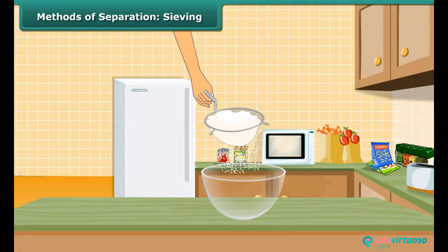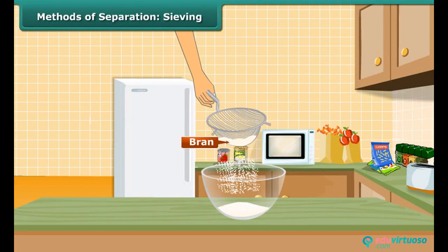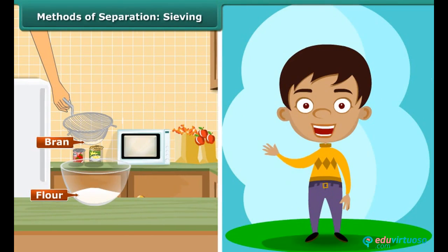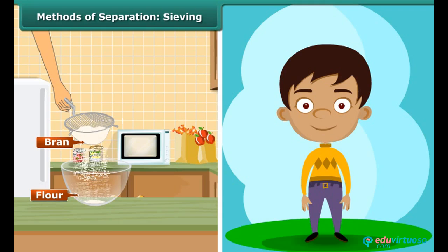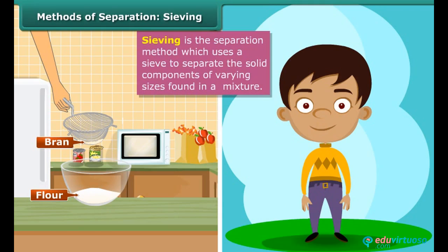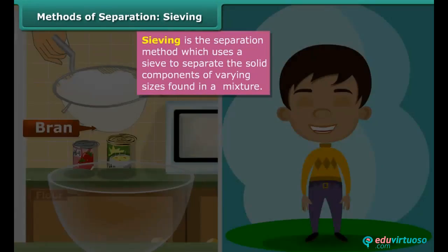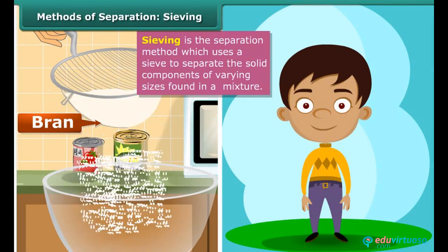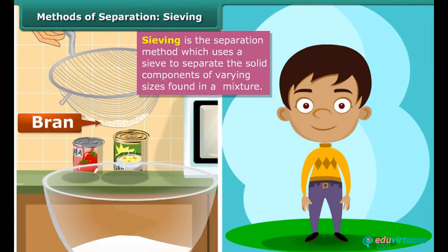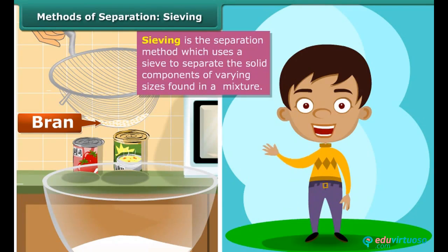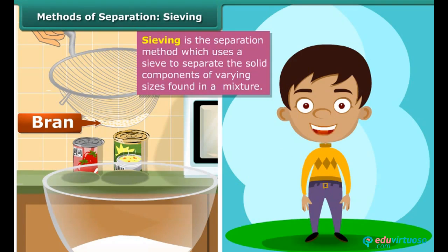Children, have you seen how your mother removes bran and other impurities from flour? They separate the coarse bran from the fine flour with the help of a sieve. This technique of using a sieve to separate the solid components of different sizes in a mixture is known as sieving. In this method, the mixture is placed on the sieve and shaken. Smaller particles pass through the holes of the sieve to the container placed below and are thus separated from the bigger particles that are retained in the sieve.